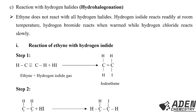Number three is reaction with hydrogen halides, called hydrohalogenation. Ethyne does not react with all hydrogen halides equally: hydrogen iodide reacts readily at room temperature, hydrogen bromide reacts when warmed, while hydrogen chloride reacts slowly. In step one of the reaction of ethyne with hydrogen iodide, the triple bond breaks to form a double bond, giving iodoethene.